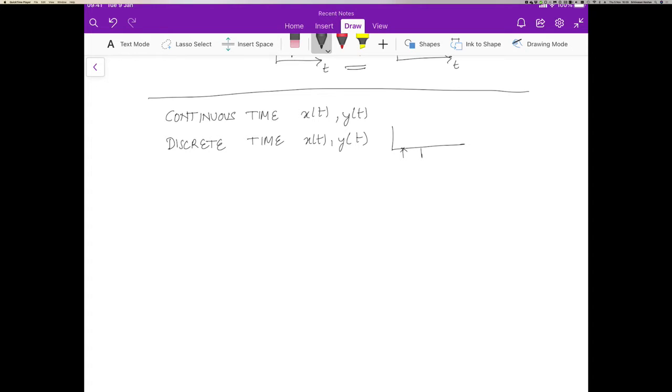So at these time instances here and here and here they take on a certain value. This might be what x looks like and in between we really don't know what happens to them. We don't really care. We are just going to look at the behavior of the system at these discrete time instances. And in continuous time the function is defined for all values of the real line.